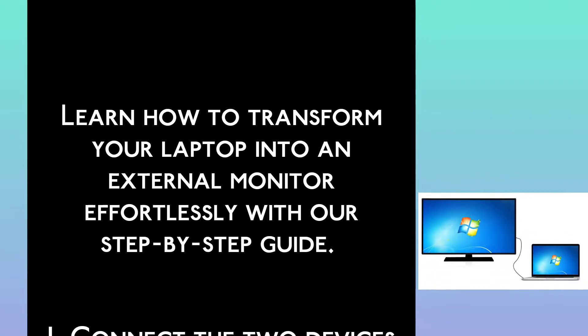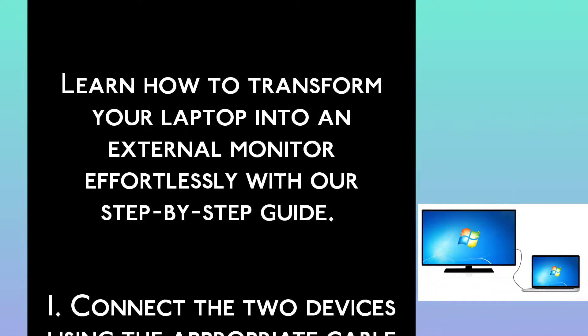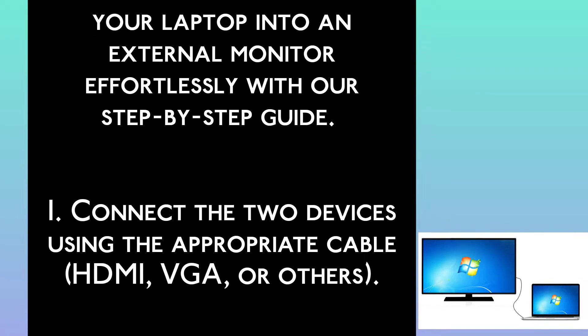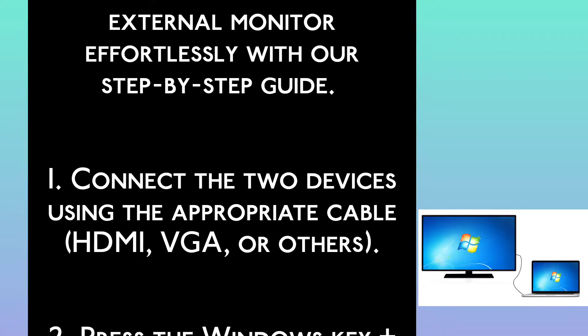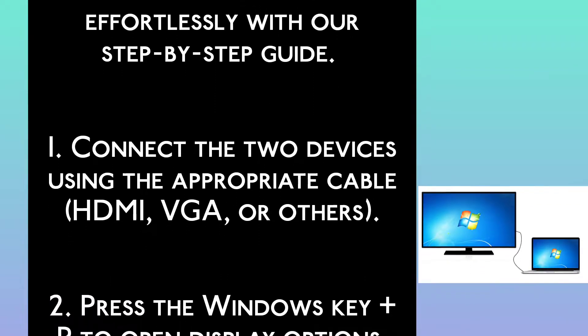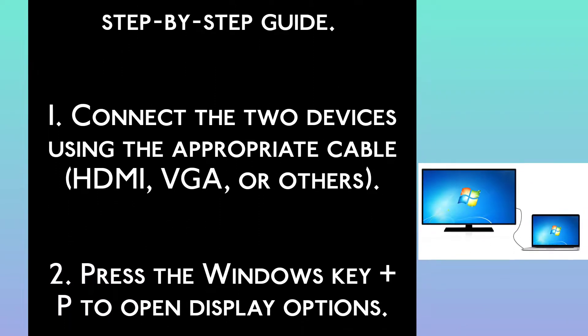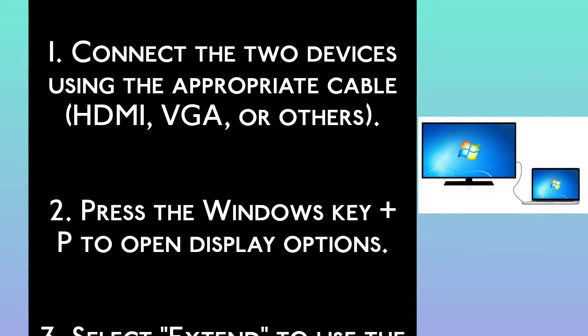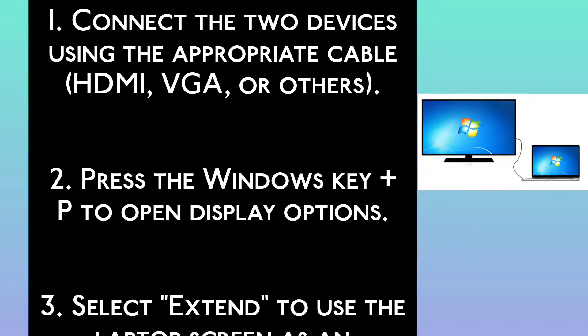Step 1: Connect the two devices using the appropriate cable — HDMI, VGA, or others. Step 2: Press the Windows key plus P to open display options.